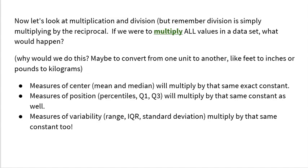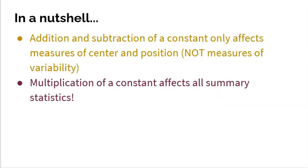Measures of center, mean and median are going to multiply by that value. Measures of position, percentiles, Q1, Q3, they're going to multiply by that value. And even range, IQR, standard deviation, your measures of variability, they're going to multiply by that value as well. Everything changes with multiplication. So in a nutshell, it's pretty simple. Addition, subtraction of a constant only affect measures of center and position, not measures of variability. Addition, subtraction do not affect variability - range, IQR, standard deviation. Multiplication affects everybody.